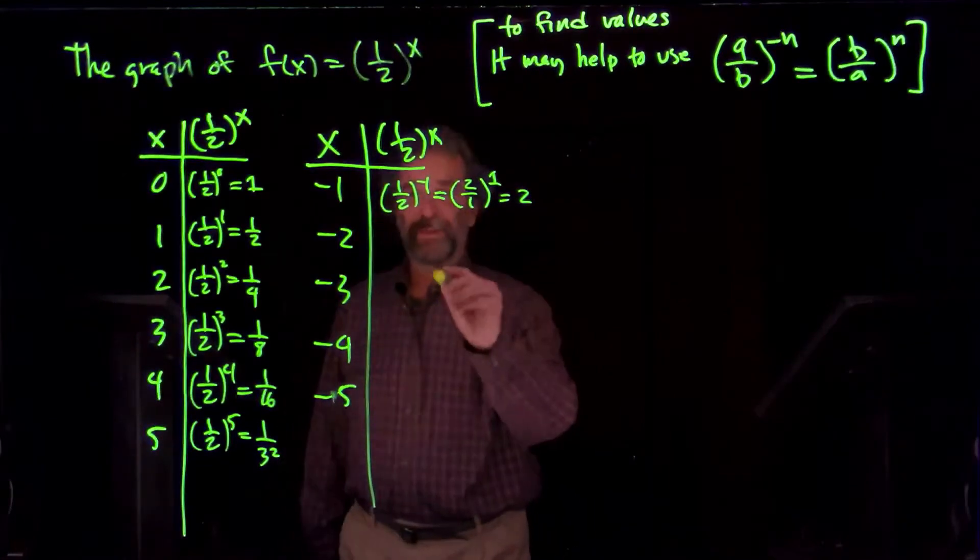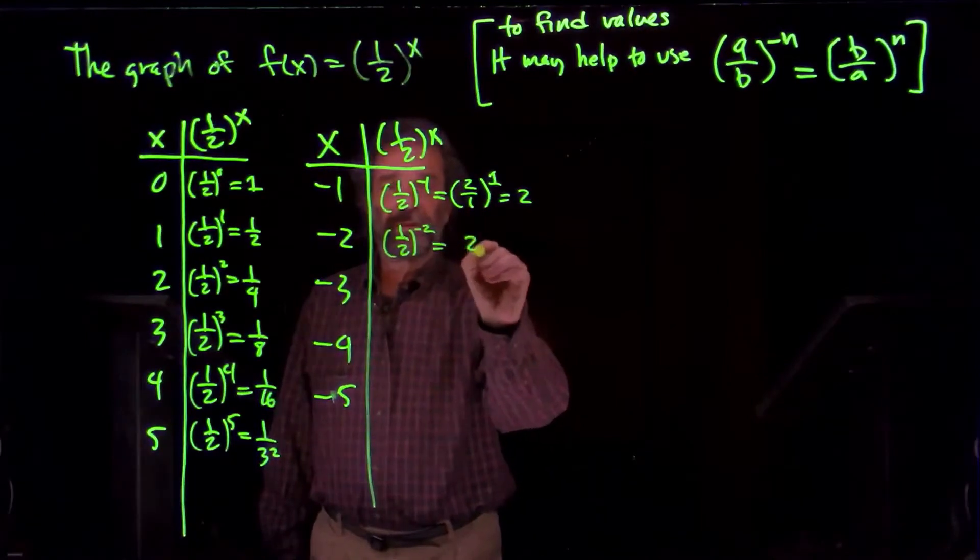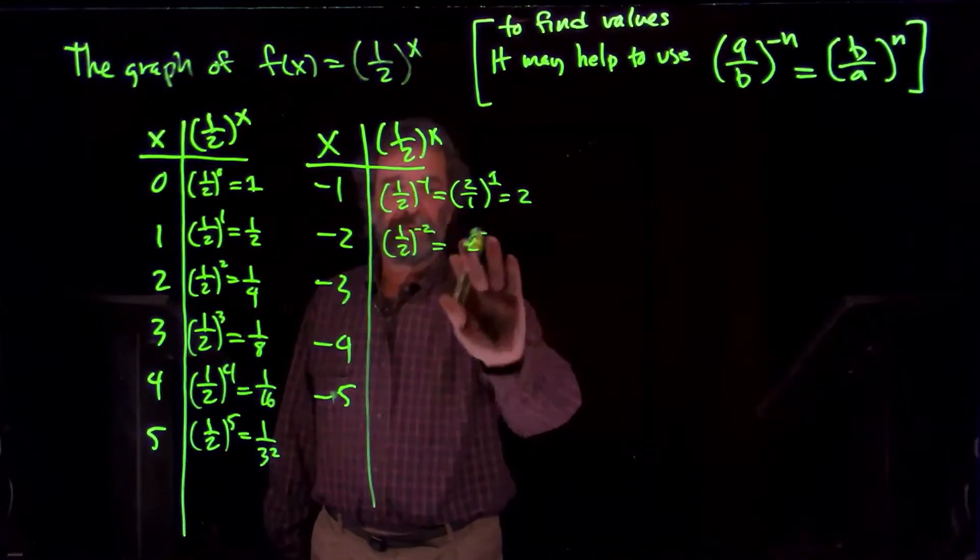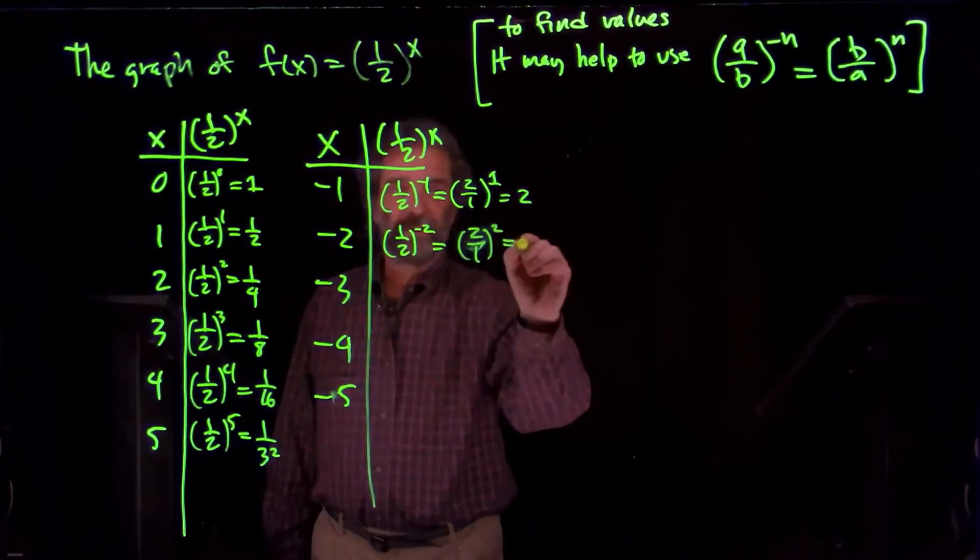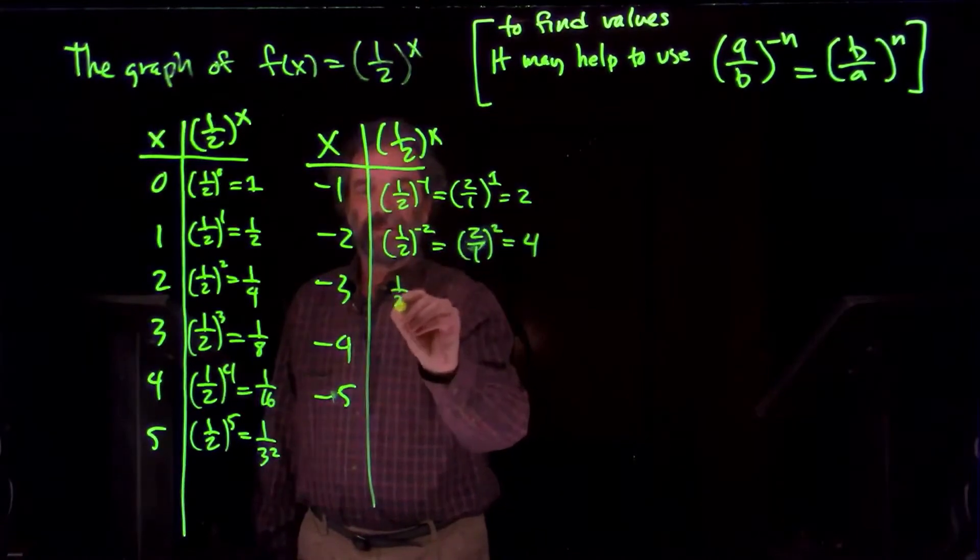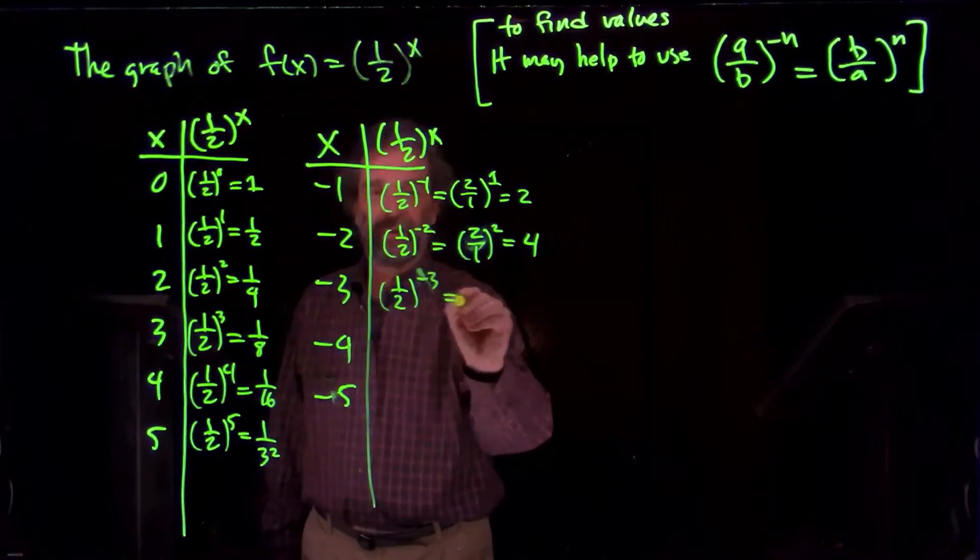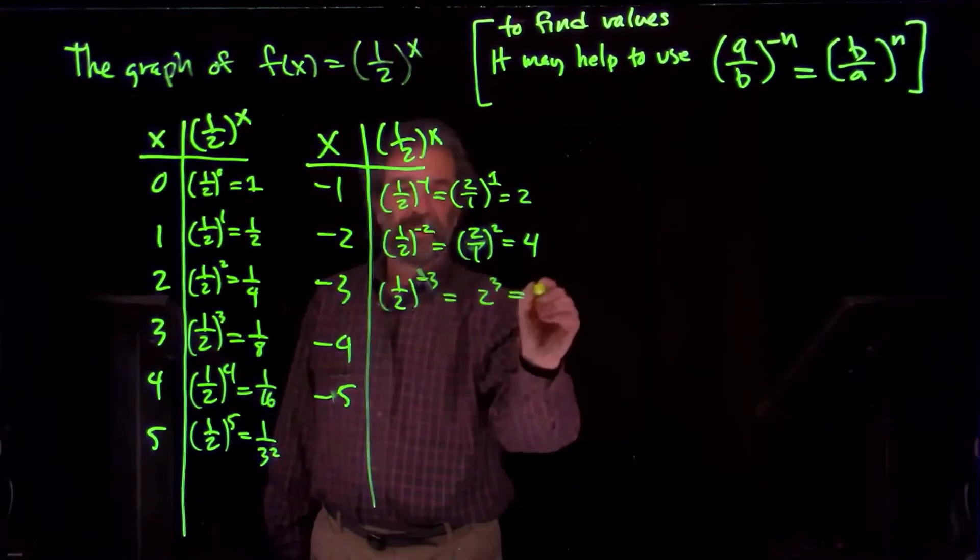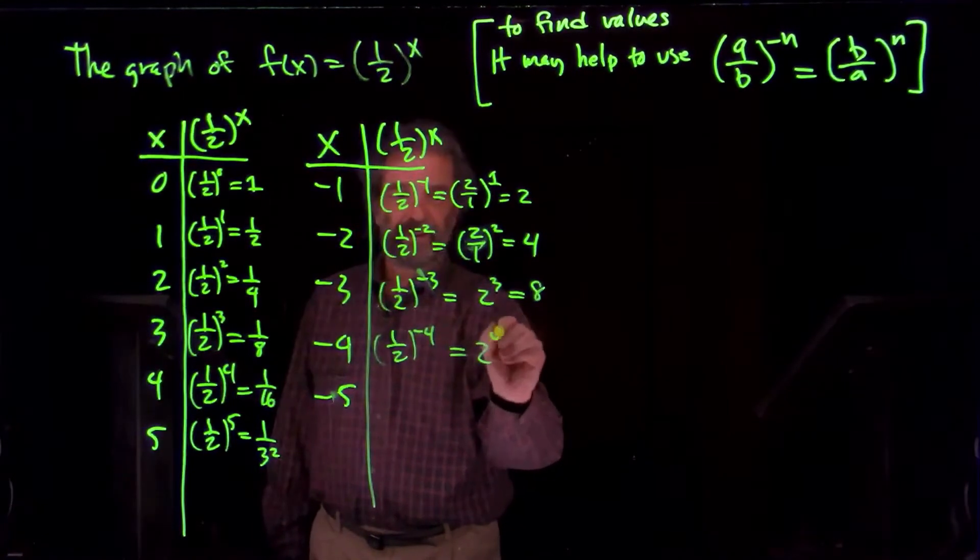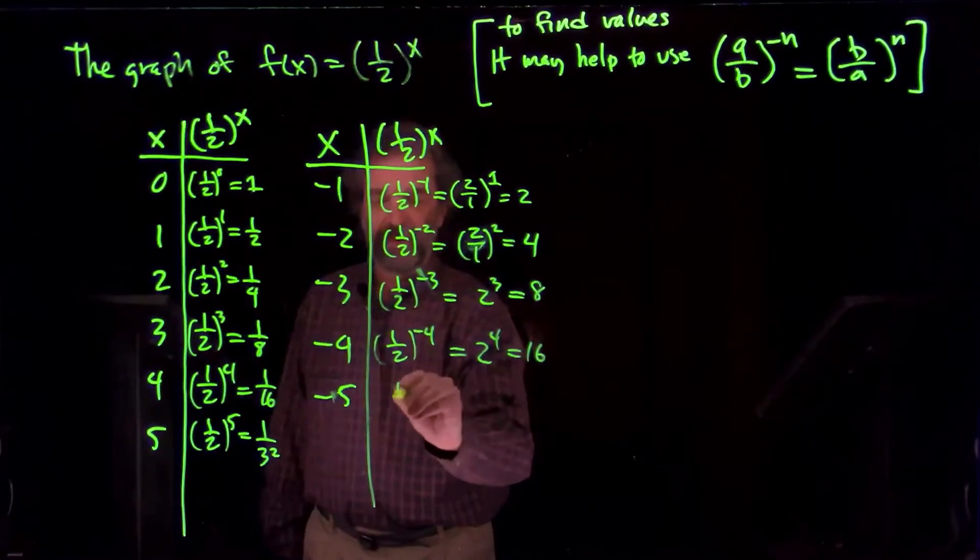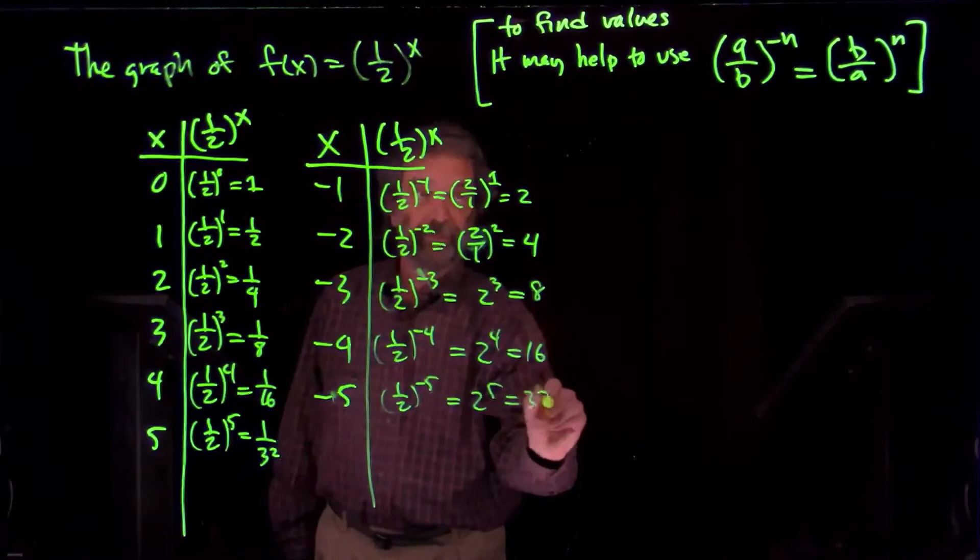But this is quick. So we'll do one-half to the minus 2 is 2 squared, because that's 2 over 1. Should I write it? I'll write it. It's for fun. Which is 2 squared. And one-half to the minus 3 is 2 cubed. That's 8. One-half to the minus 4 is going to be 2 to the 4th. That's 16. And one-half to the minus 5 is going to be 2 to the 5th, which is 32.